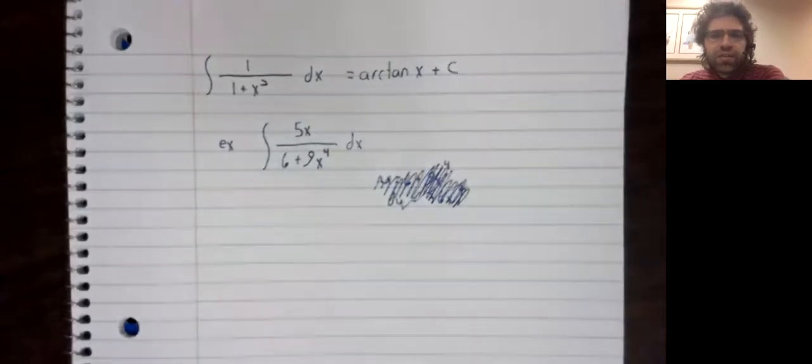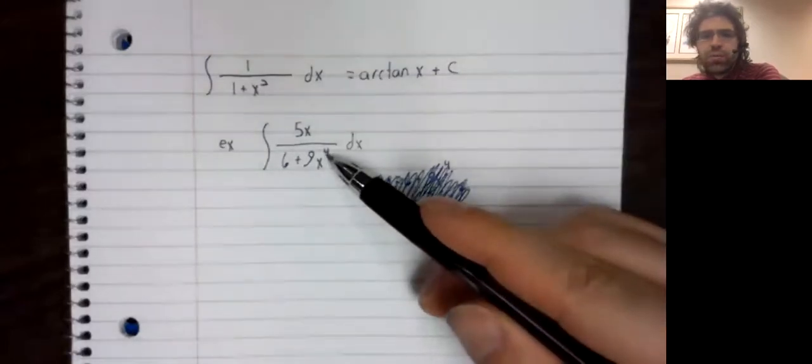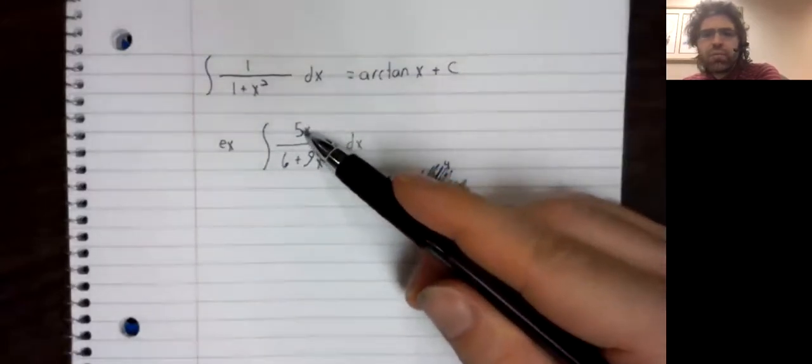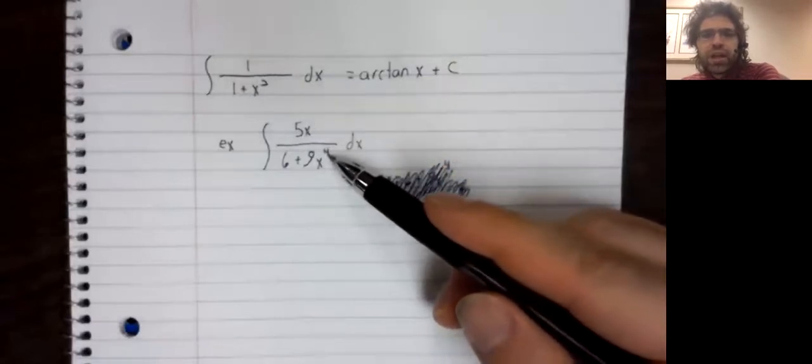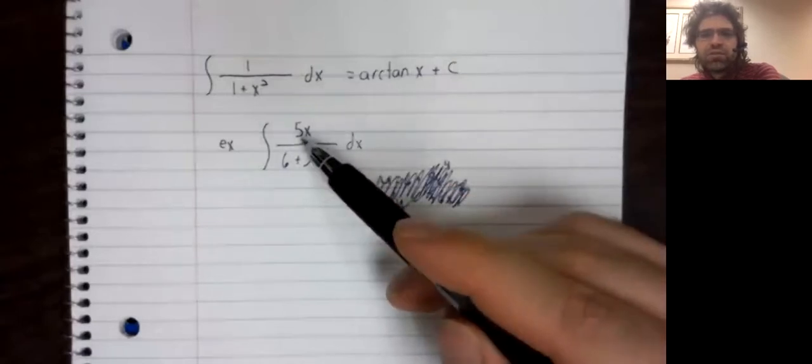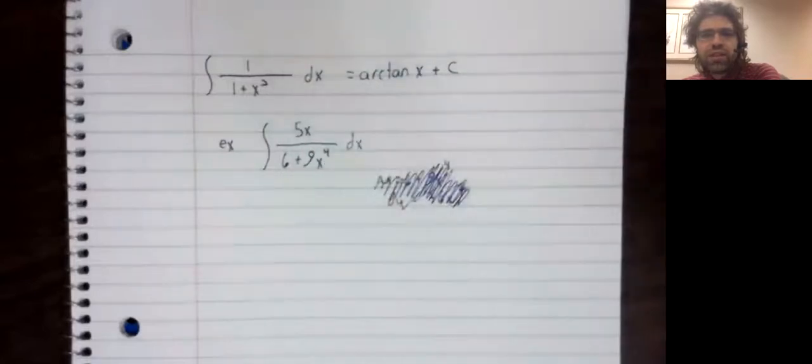And eventually, maybe after a false start or two, you look at this and you say, well, we don't have a one here and we don't have an x squared here. But this does look kind of like this.